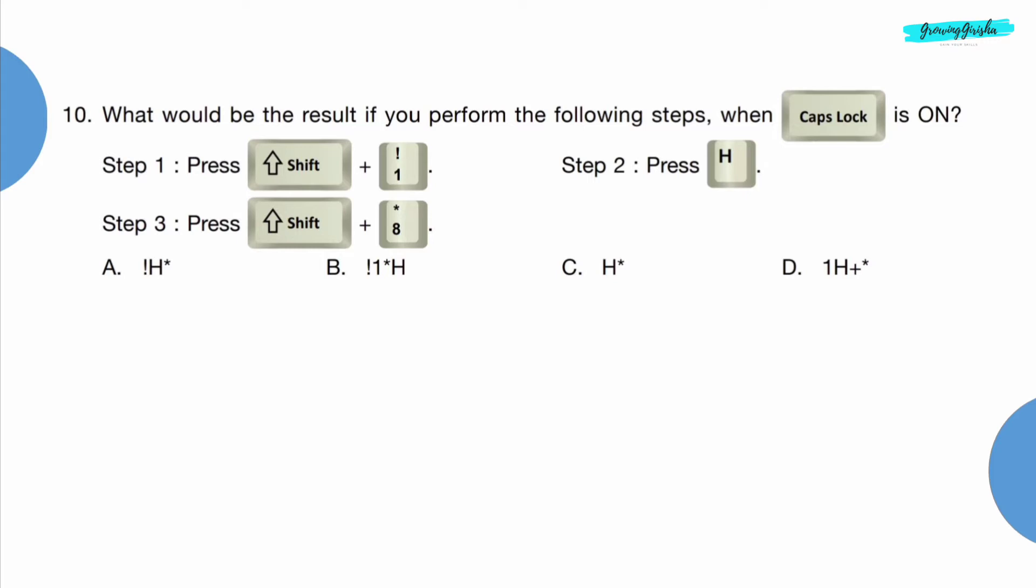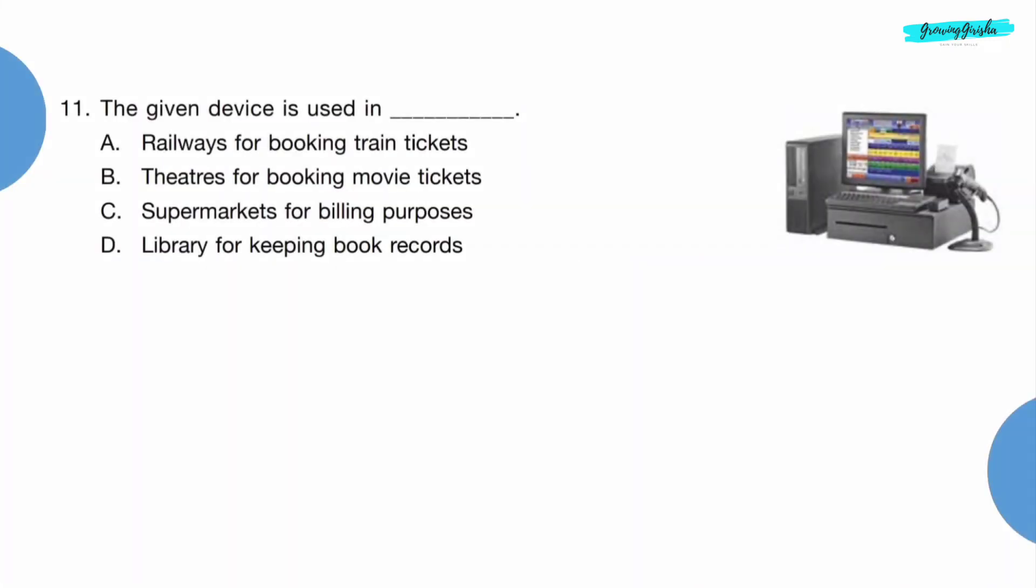Question 10: What would be the result if you perform the following steps when Caps Lock is on? Step 1: Press Shift plus 1. Step 2: Press H. Step 3: Press Shift plus 8. When we press Shift plus 1 we get exclamation mark, on pressing H we get H, on pressing Shift plus 8 we get star or asterisk. So option A is the correct answer.